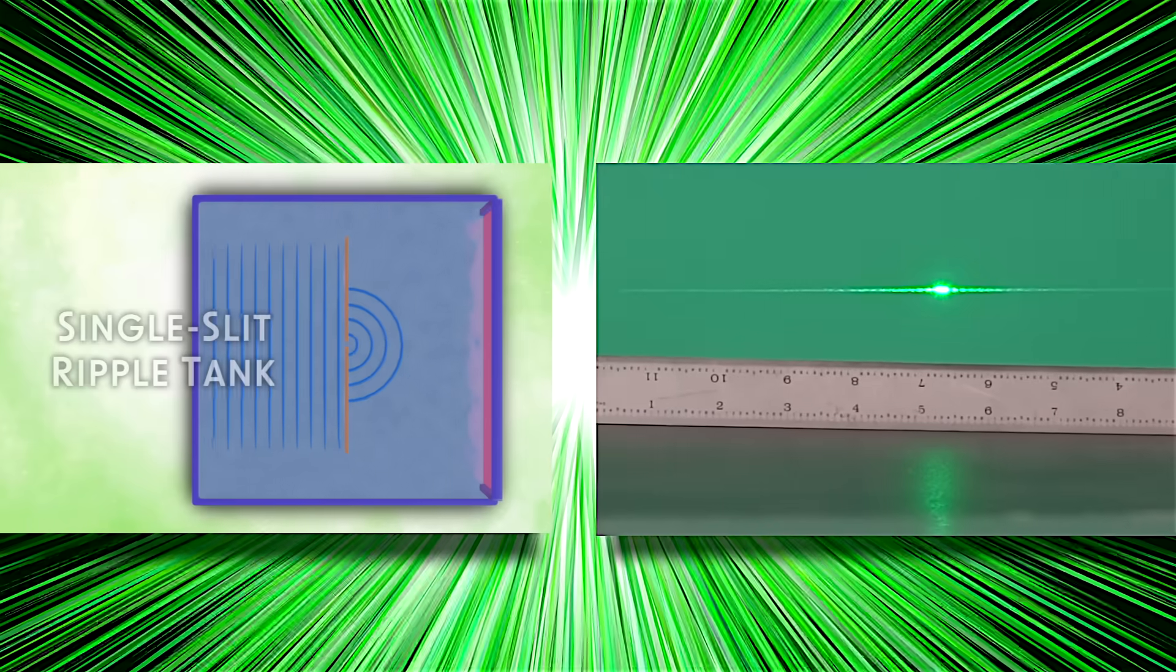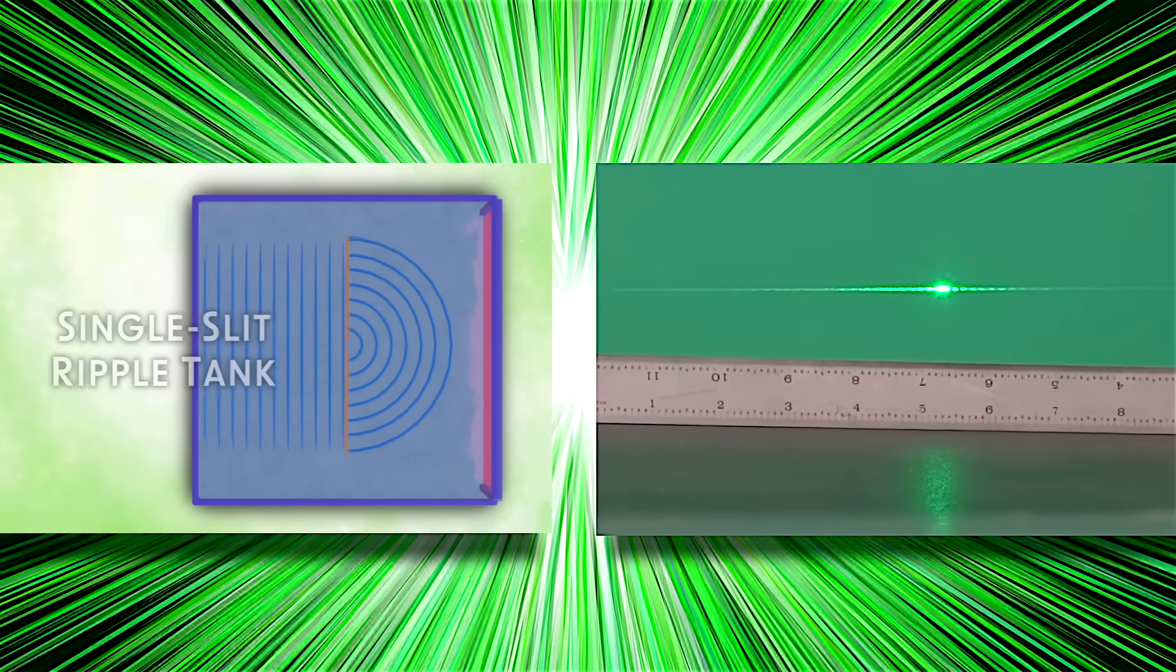One slit creating two patterns. Now that really is a mystery. Especially if we take another look at a ripple tank demo.